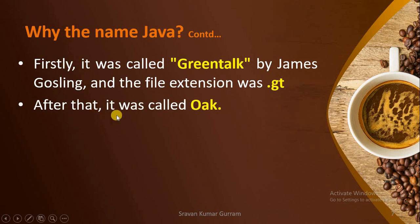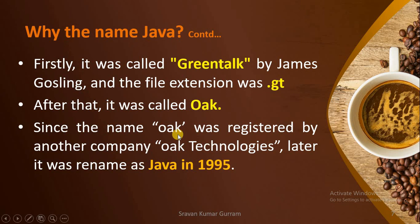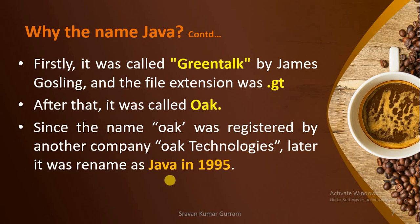After that, the language was called by another name: Oak. At that time, another company was already registered with the same name — Oak Technologies. Due to this naming conflict, the programming language was renamed as Java in the year 1995.